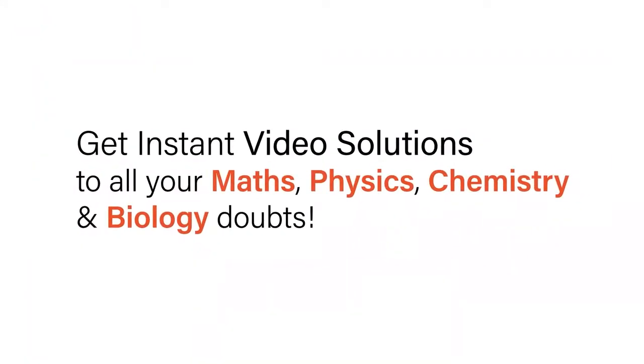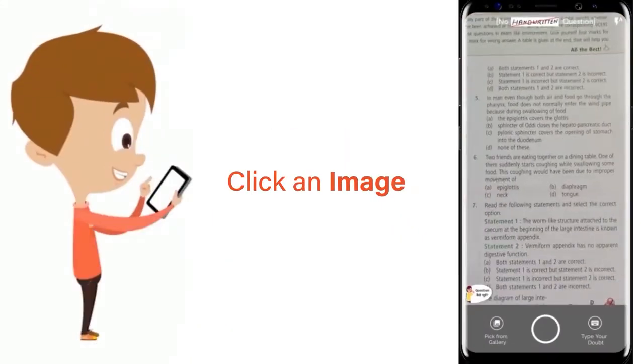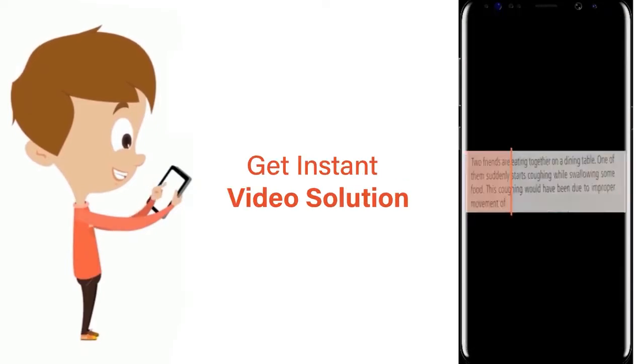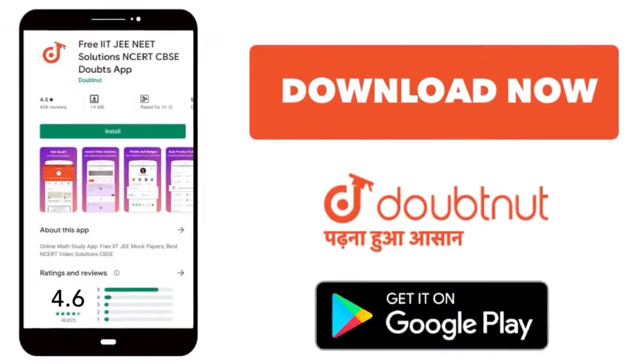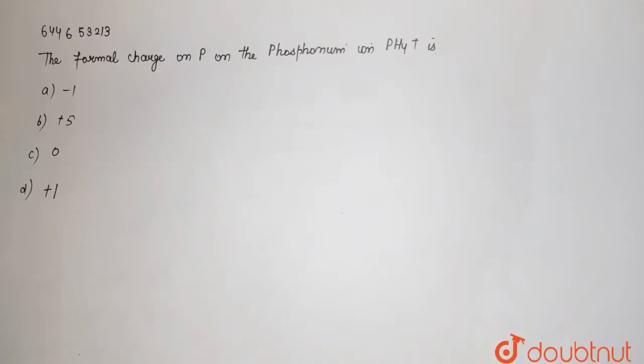With Doubtnet, get instant video solutions to all your maths, physics, chemistry and biology doubts. Just click the image of the question, crop the question and get instant video solution. Download Doubtnet app today. Formal charge on phosphorus in the phosphonium ion PH4 positive.